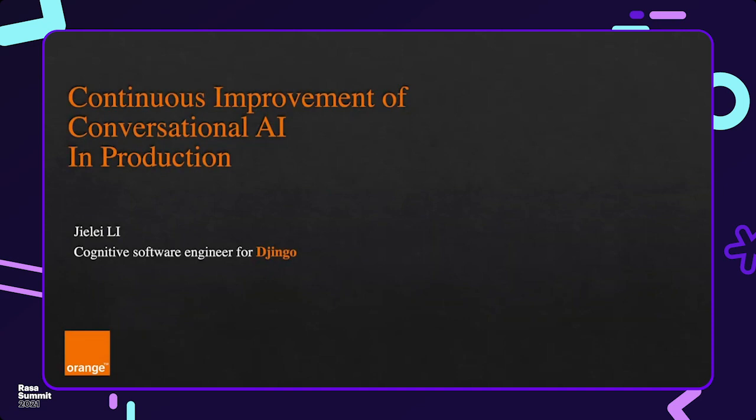Hello everyone, thank you for having me here for the Rasa Summit. I'm Jielei Li, Cognitive Software Engineer for Jingle, the conversational AI of Orange. Since 2019, Jingle has been helping our customers with their online shopping, answering questions about customer service and technical troubleshooting. With these experiences from production and feedback from my colleagues, I'd like to talk about continuous improvement today.